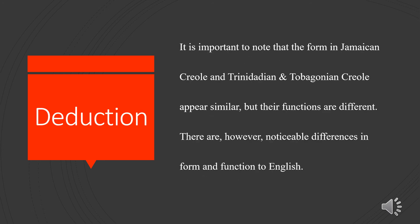What we have gathered from this lesson is that it is important to note that the forms in Jamaican Creole and Trinidadian and Tobagonian Creole appear similar but their functions are different. There are noticeable differences in form and function compared to English. In both Creoles, tense is not expressed by inflected verbs but by tense markers. These two Creoles rely on their tense markers, and this is one of the biggest differences between Creoles and their lexifying language, English.